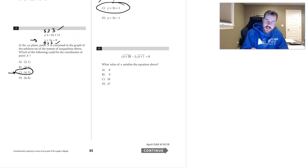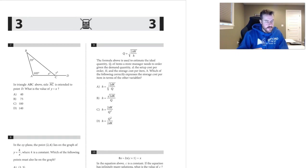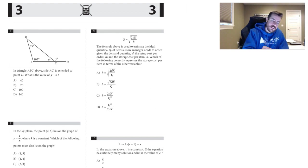Number six: test the answer choices. 26 and 27 are too high, and 9 gives the square root of 10 — unlikely. Trying 8: the square root of 8 plus 28 is the square root of 36, which is 6, minus 2 times 3 equals 0. Yes, that equals zero, so the answer is choice A.